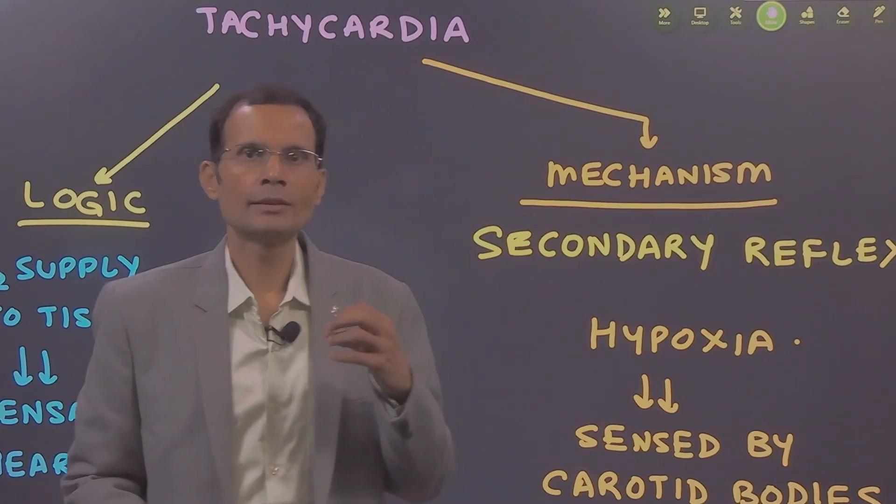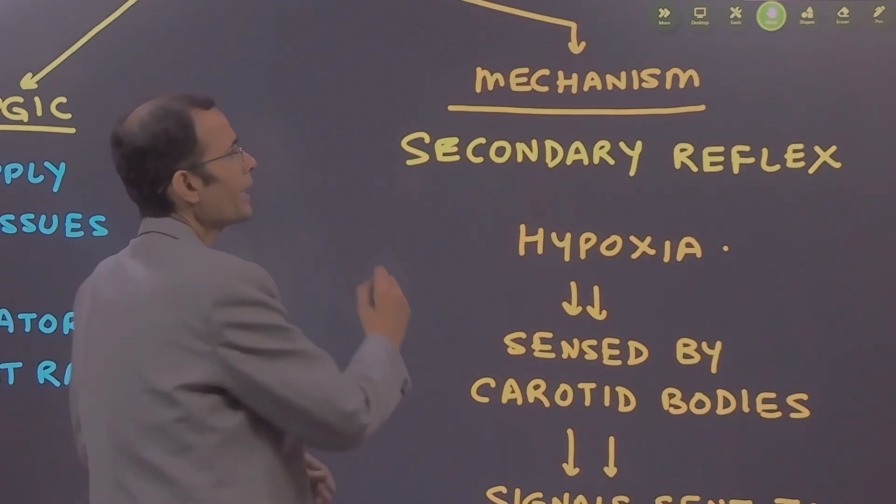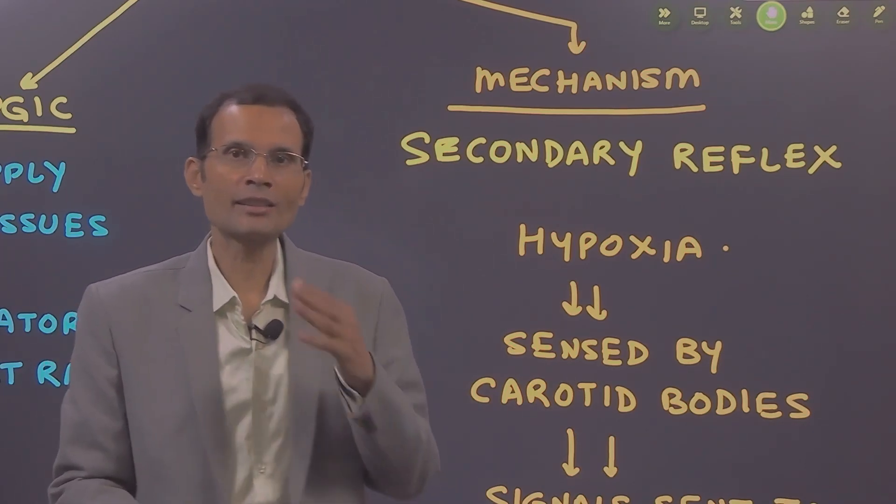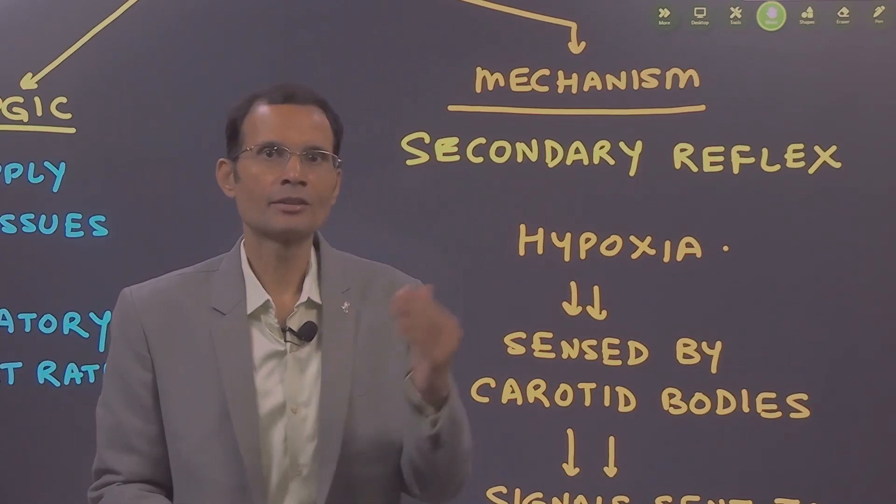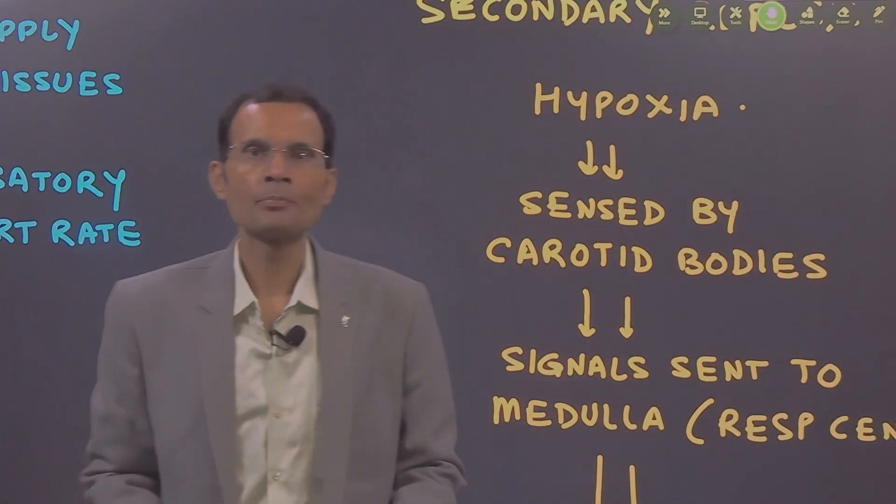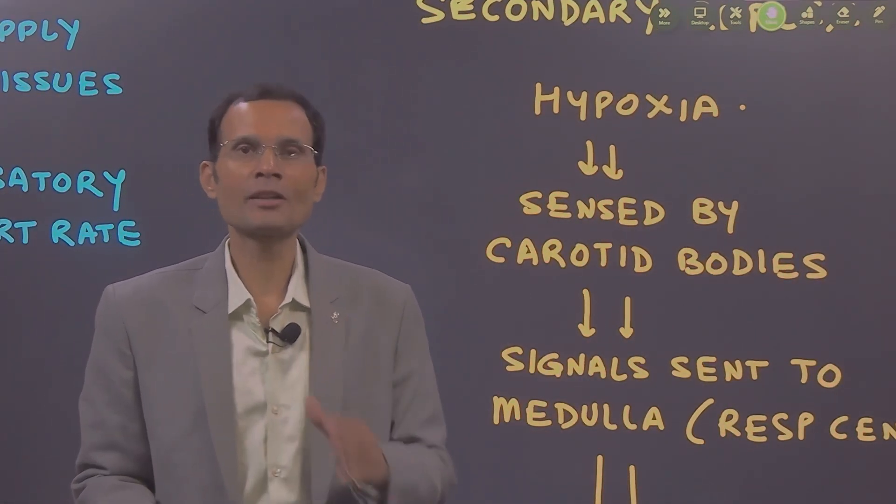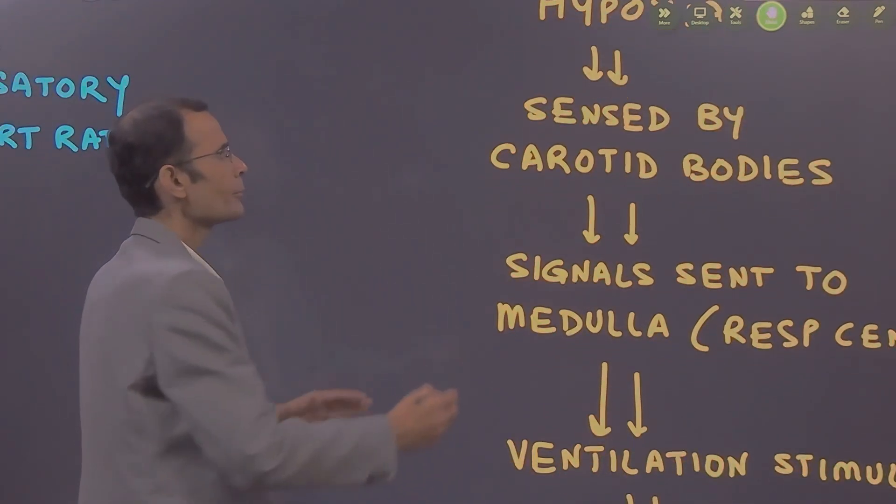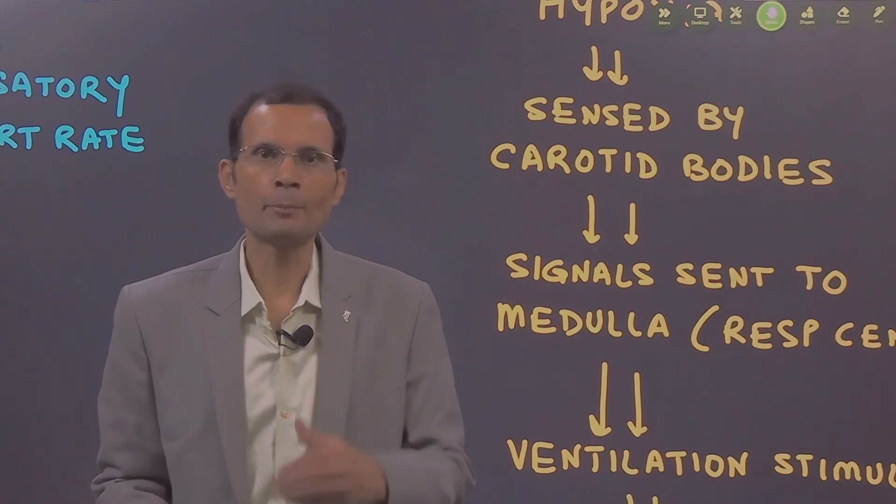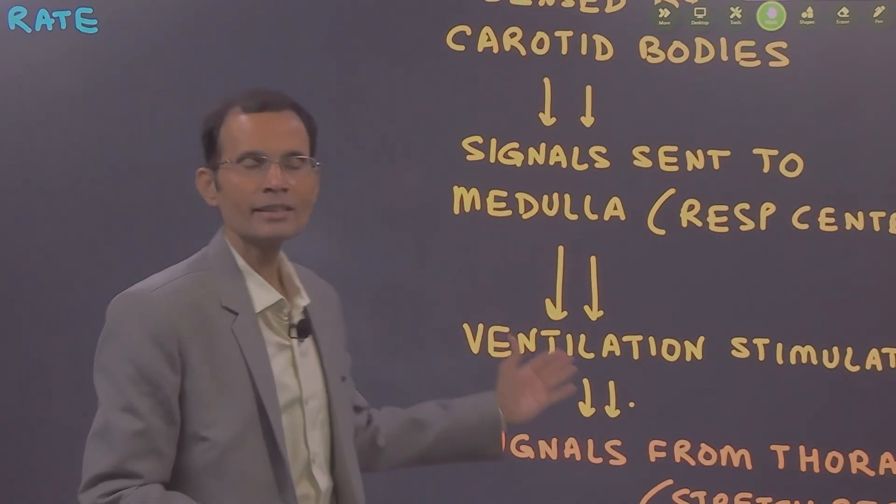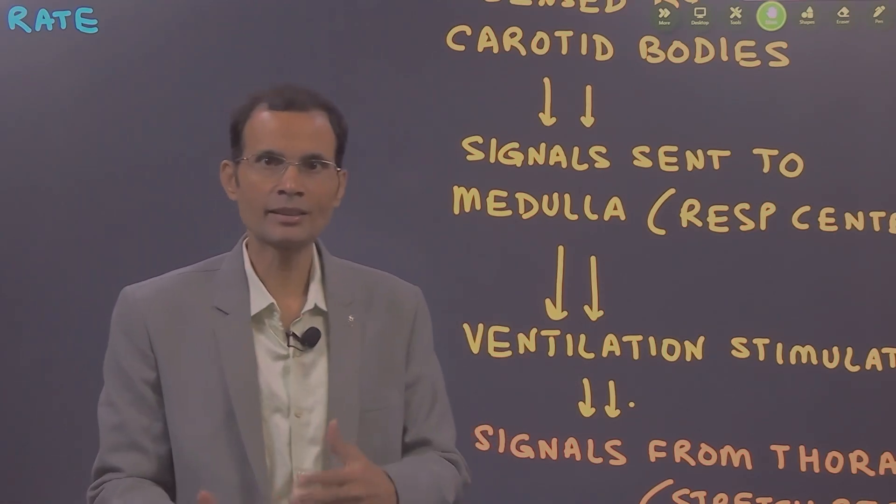Hypoxia leads to reflex tachycardia by a secondary reflex. There's going to be a primary reflex and a secondary reflex. Hypoxia will be sensed by the peripheral chemoreceptors. The carotid bodies and aortic bodies sense the hypoxia, generate signals, and send the signals via the 9th and 10th cranial nerves.